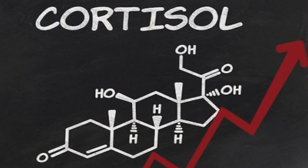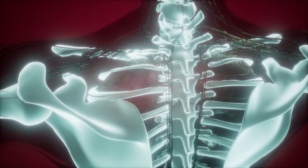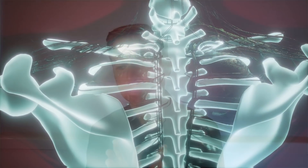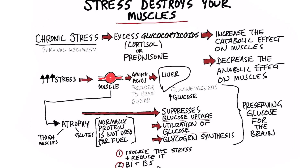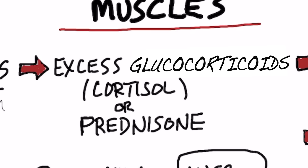Let's talk about the relationship between stress and your muscles. When you go through chronic stress, which creates an elevation of cortisol, various things happen to different parts of your body. Today we're going to focus more on the skeletal muscles. It's not necessarily just excessive stress — it could be excess cortisol, another name for that being glucocorticoids. Or as an external source, if you're on prednisone, for example, you're getting a lot of that cortisol, and that can create the same effect.